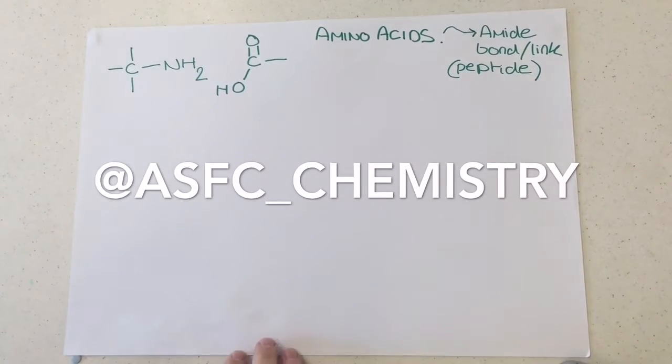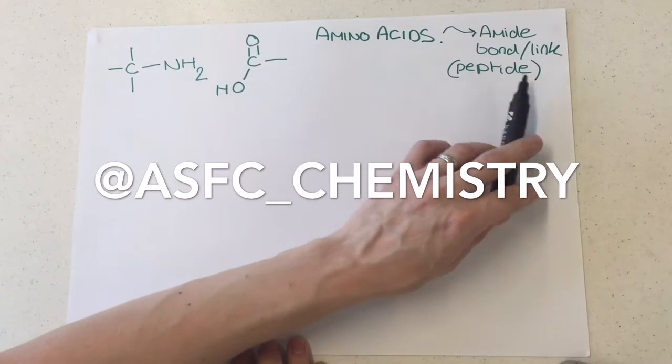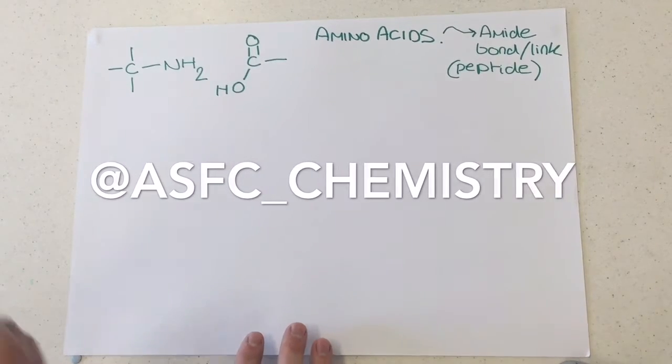Hi everyone, welcome back to ASFT Chemistry. What I'm going to go through with you here is how we form an amide bond or link, which we can also call a peptide bond, between two amino acids or the functional groups on one amino acid.